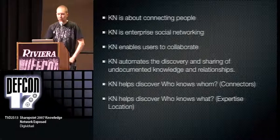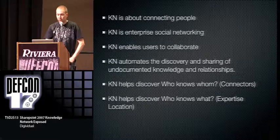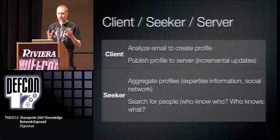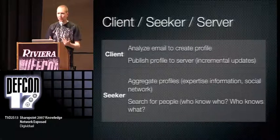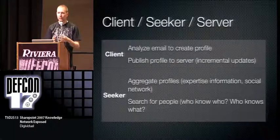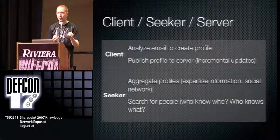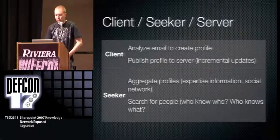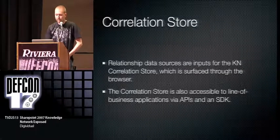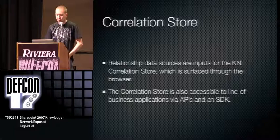It's a client-server product, but it has a component called the seeker. Some of the client components will actually run inside of Outlook, inside your email client, on your desktop, and will constantly be feeding information back to the server, which stores it, and the seeker will index it. The seeker will aggregate profiles and try to discover who knows who, who knows what, when, why, and so forth. The relationship data sources are input for the Knowledge Network Correlation Store — which is the seeker — surfaced through the browser.